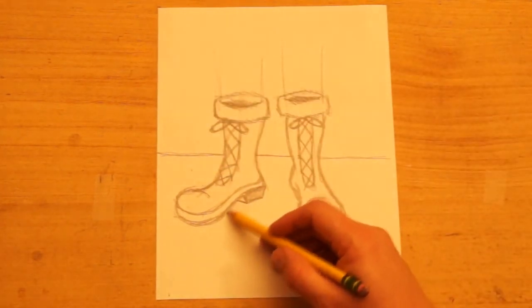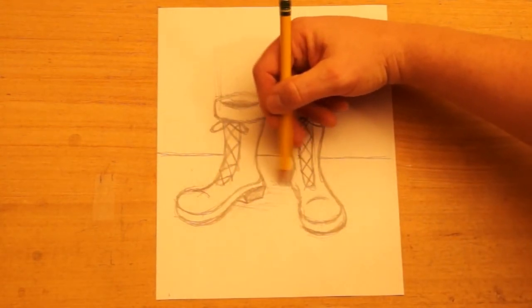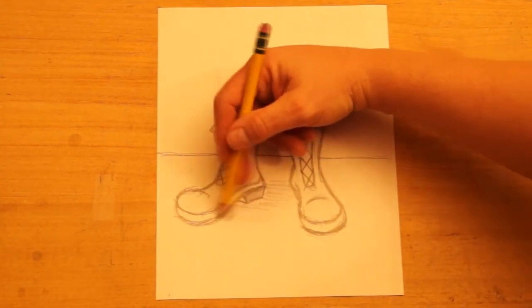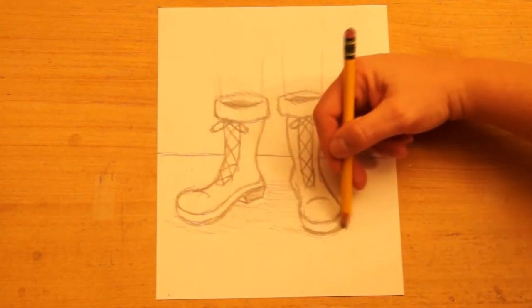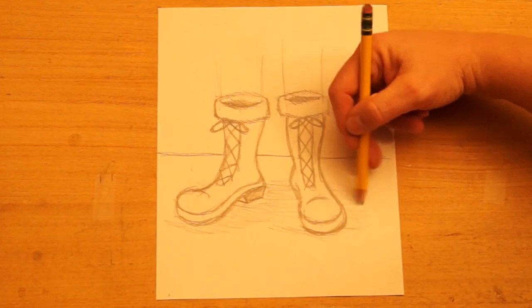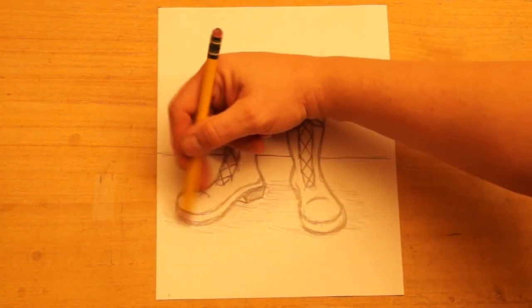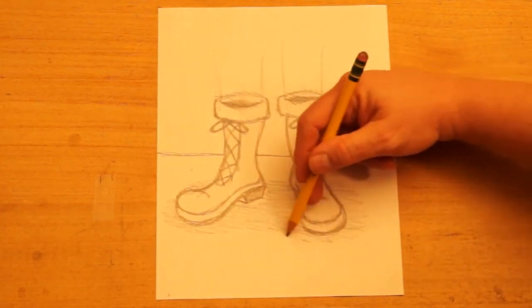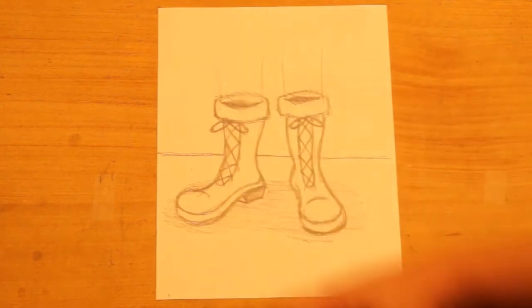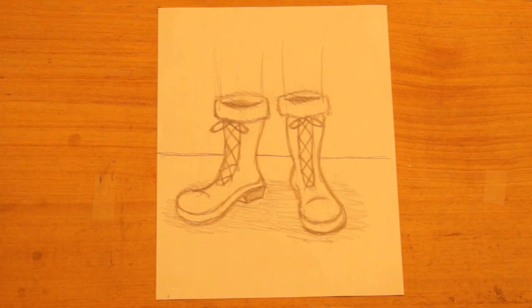Maybe a little bit of shading down here to indicate that these are on the ground. It doesn't have to be real dark. It just gives you the idea that the boots are on the ground. Clean up your drawing, add color if you'd like, and this is our drawing for today. Snow boots.